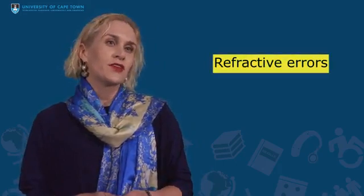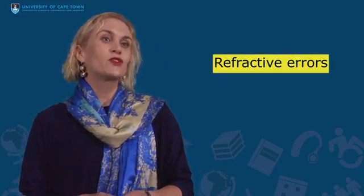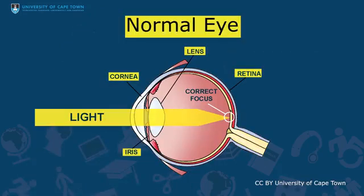Now let's move on to common causes of low vision in children. Starting at the front of the eye, refractive errors are the most common problem. This is often due to abnormalities of the shape of the eye or the cornea. Moving a bit more into the eye, the lens is another location where problems may arise, typically cataracts.